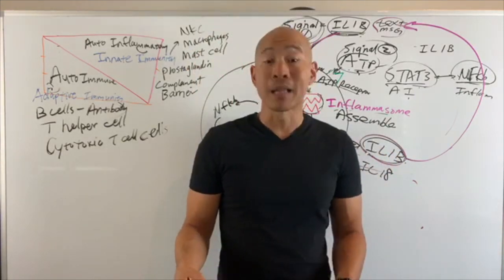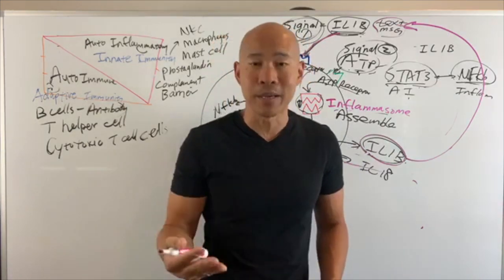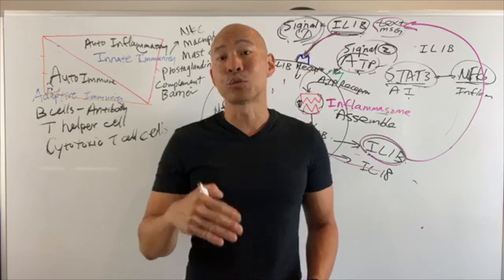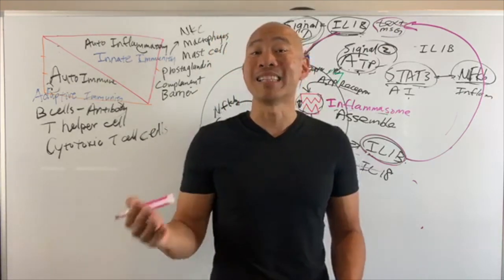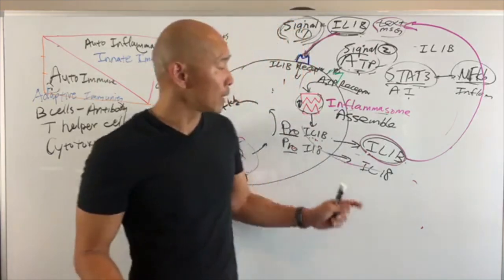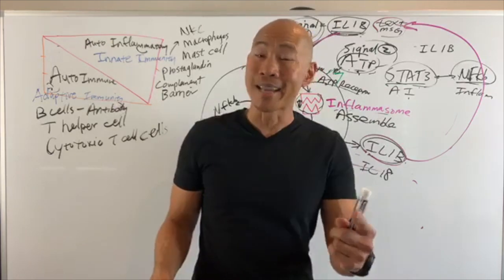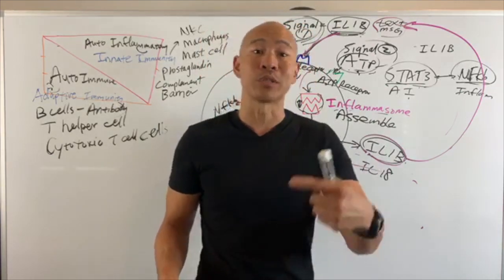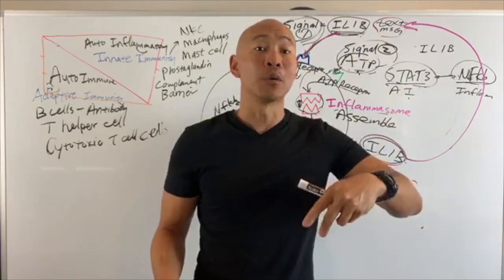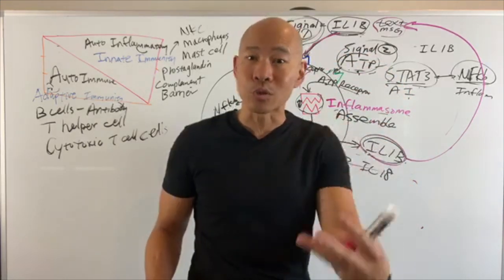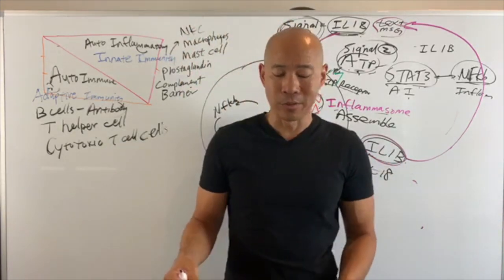Another compound is melatonin. People think melatonin is just for sleep, but melatonin is a hormone that controls circadian rhythm and sleep — and it's also a very potent antioxidant with the ability to dampen IL-1 beta. That's perhaps why sleep is so restorative: during deep sleep you have higher levels of melatonin, which not only helps you sleep but helps restore and regenerate your body by reducing inflammation.